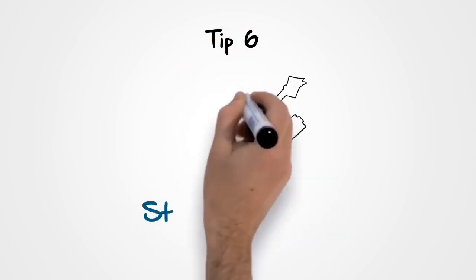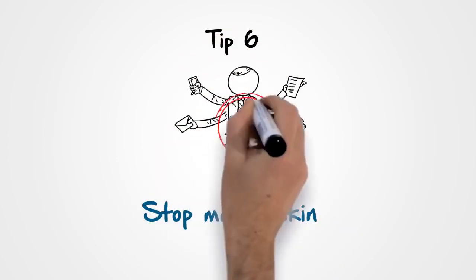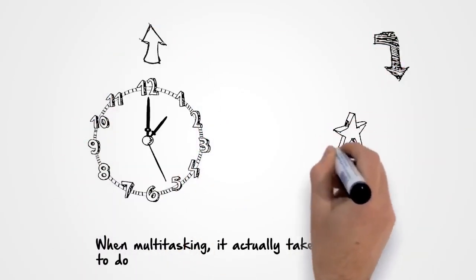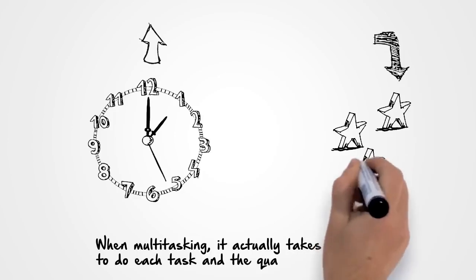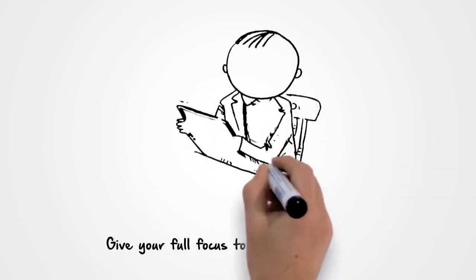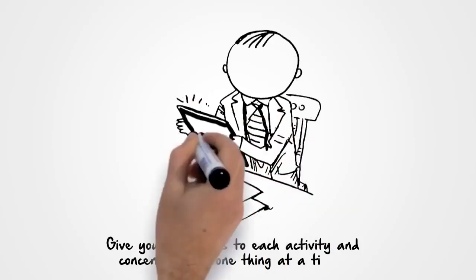Tip 6. Stop multitasking. When multitasking, it actually takes longer to do each task and the quality goes down. Give your full focus to each activity and concentrate on one thing at a time.